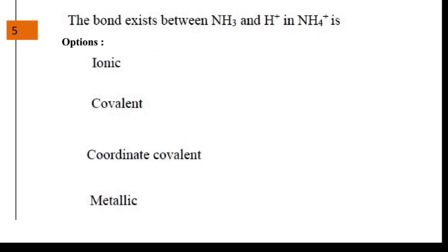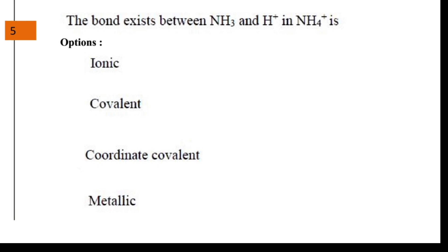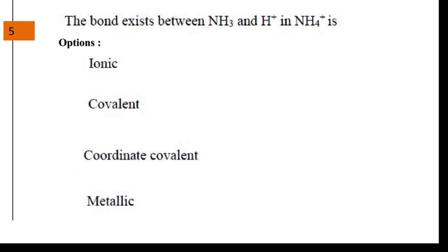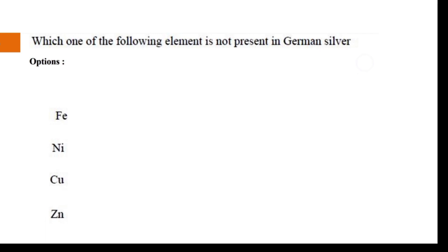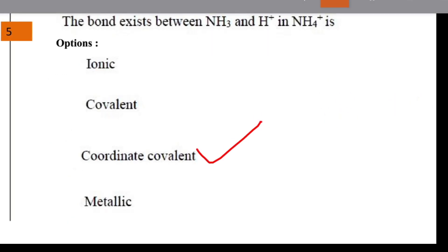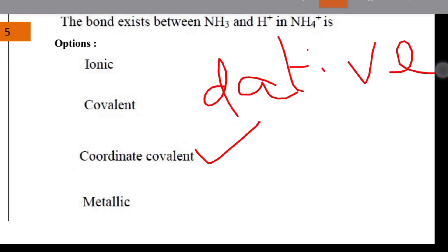Next question: the bond that exists between NH3 and H+ in NH4+ is? The options were ionic, covalent, coordinate covalent, and metallic. The answer is coordinate covalent, also known as a dative bond.